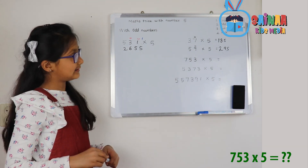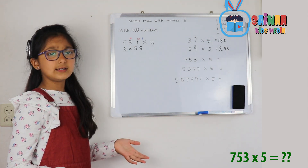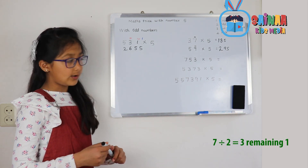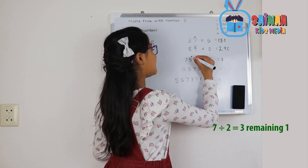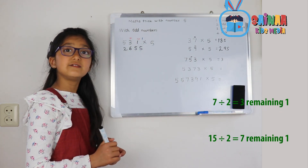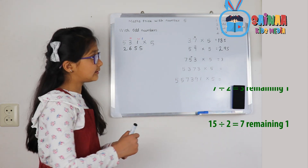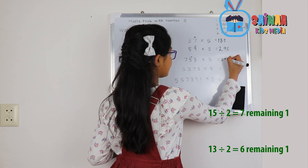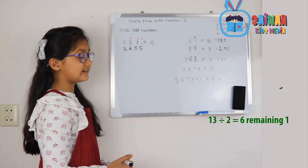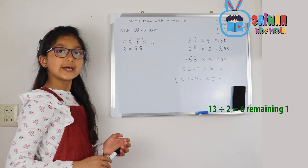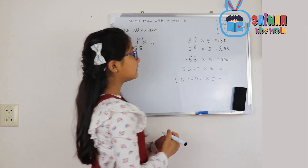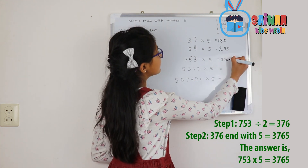Let's try it with 3 digits — the same thing. 7 divided by 2 is 3, remaining 1. This 1 turns into a 10. 10 plus 5 is 15. 15 divided by 2 is 7, rest 1. That 1 turns into a 10 again. 10 plus 3 is 13. 13 divided by 2 is 6, rest 1. And that last 1 we turn into a 5.